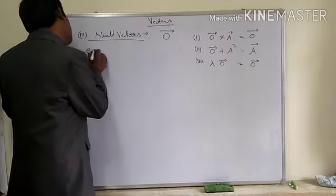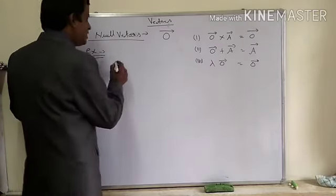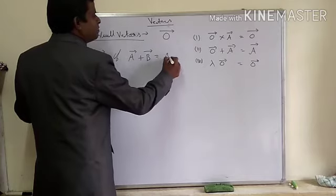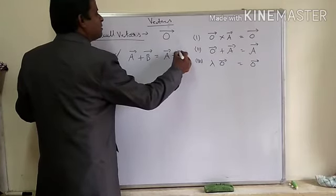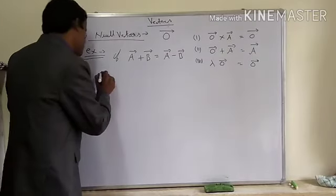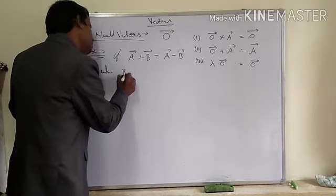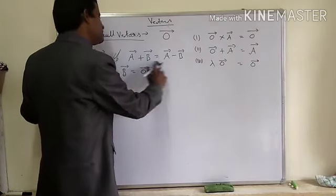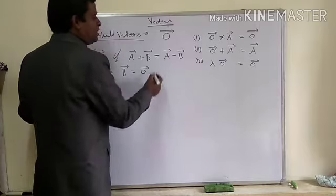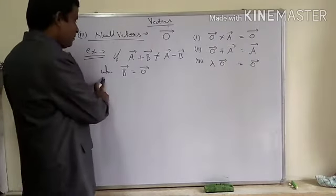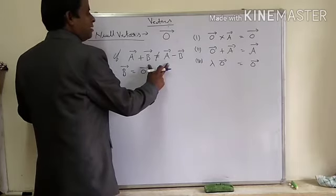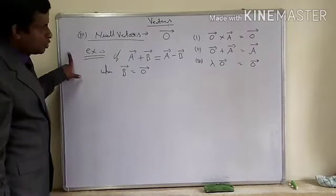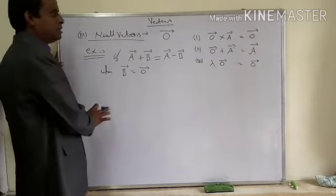Let me take an example. If vector A plus vector B equals vector A minus vector B, when is this condition possible? This is only possible when vector B is a null vector. If vector B is a null vector, then both sides will be equal to each other. Otherwise, we cannot write vector A plus vector B equal to vector A minus vector B. This is a very important concept.